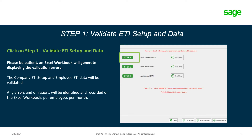The ETI validation utility consists of three steps. Step one: validate ETI setup and data. Step two: extract data and amend. Step three: import amended ETI file.